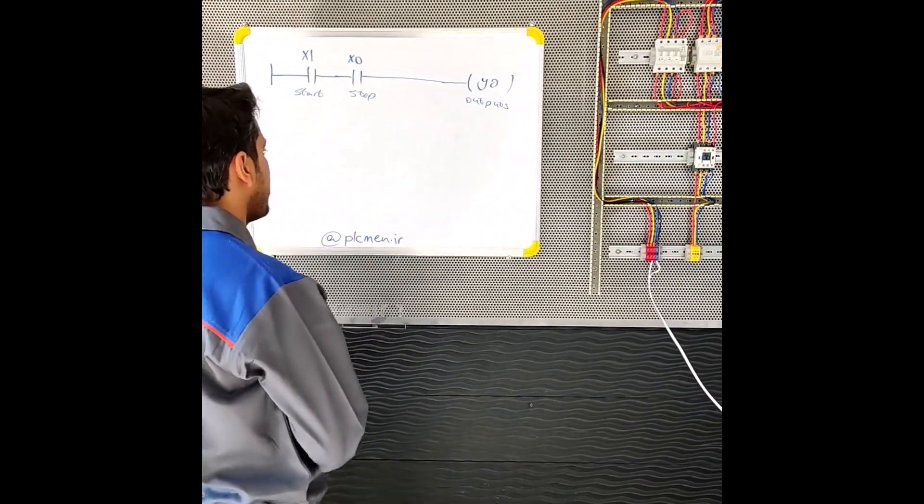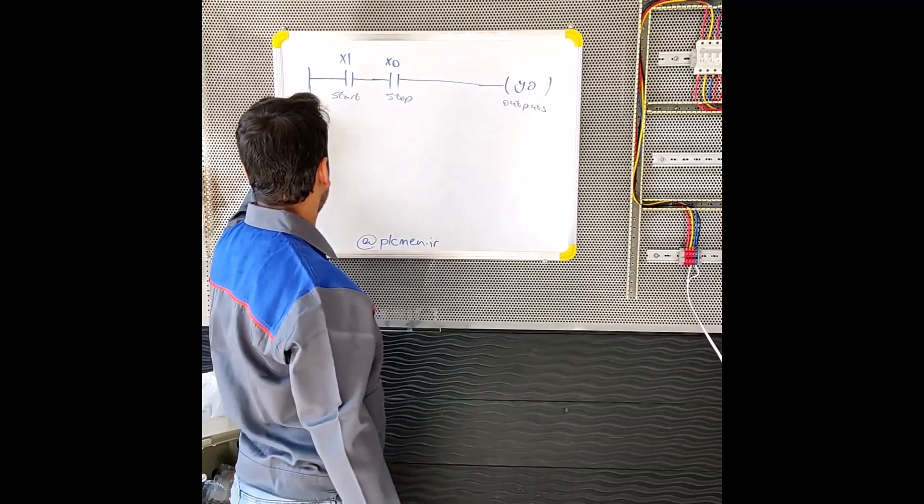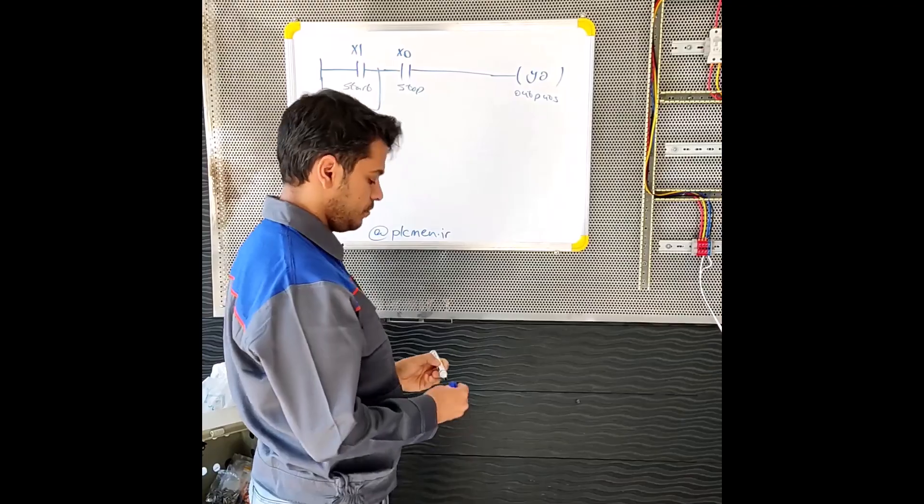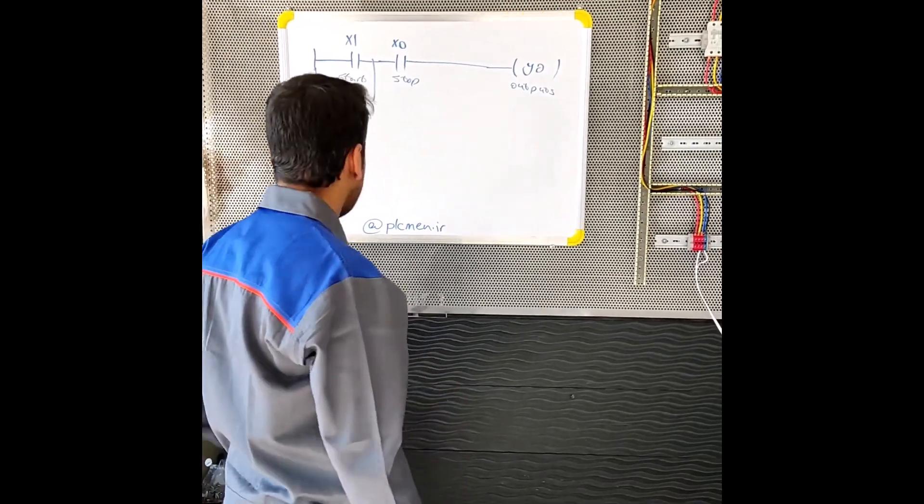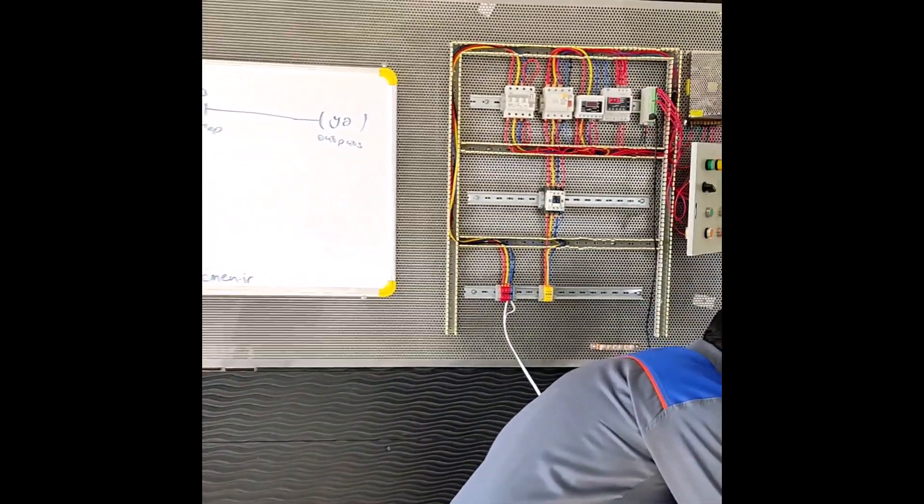If we want it to work permanently, we have to add a part of the program. We have to make the input parallel with the output. In this case, the output is placed in a permanent state.